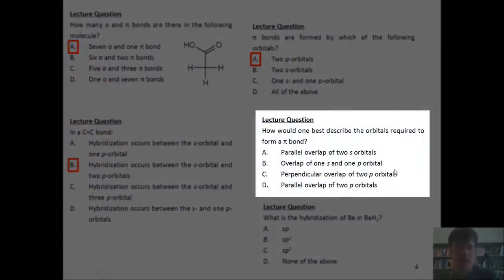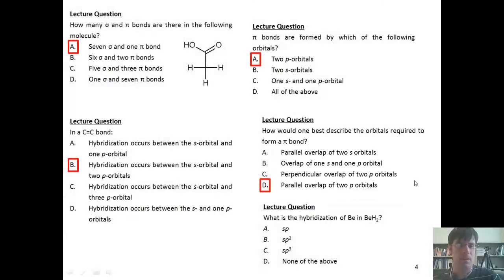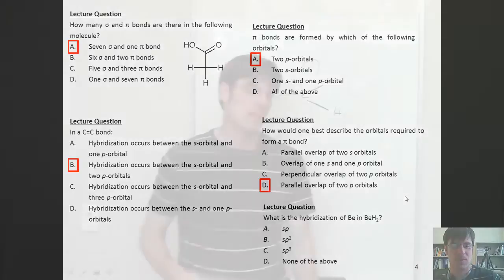In this next question, we're asked how to describe the orbitals required to form a pi bond. The correct answer is D. If you'd like to know why, stay tuned.